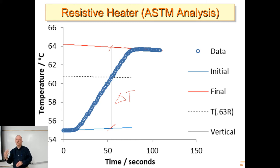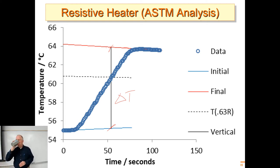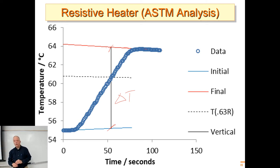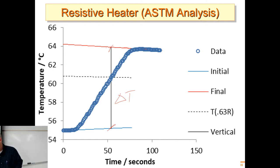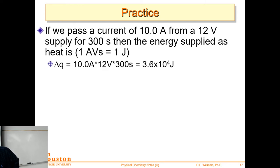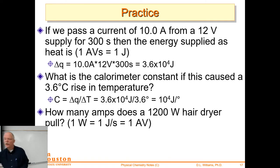This is all within the first law. The internal energy of an isolated system is constant — that's a simple way to state the first law. Another way: mass-energy is neither created nor destroyed. Energy can be converted into mass and mass into energy, but mass-energy is conserved. There are also practice problems for converting current, voltage, and time into joules.